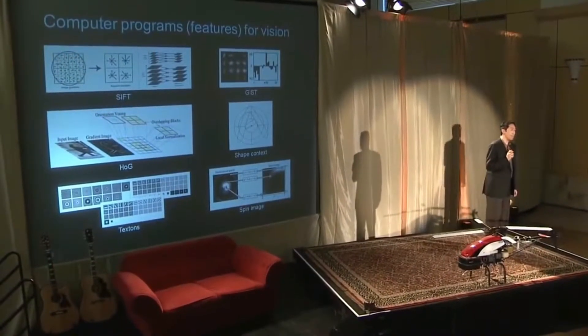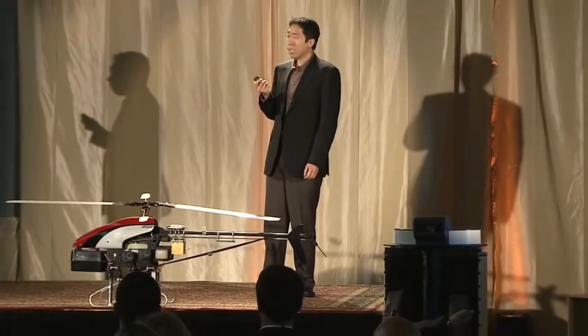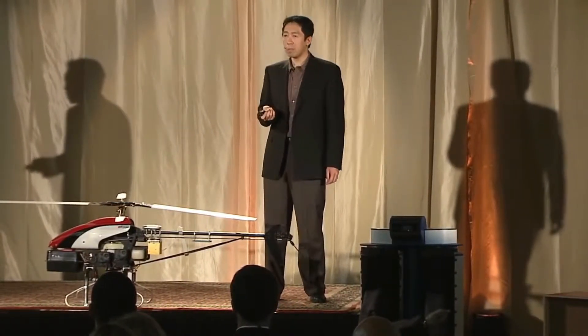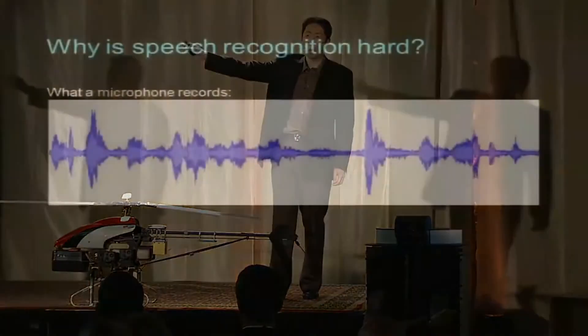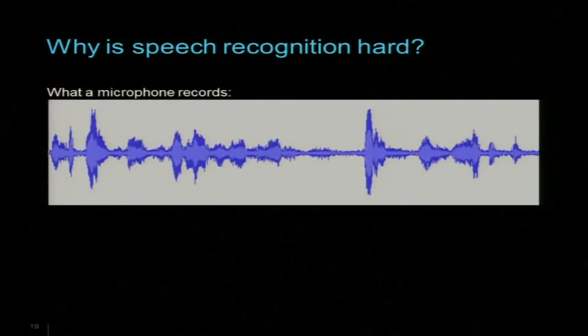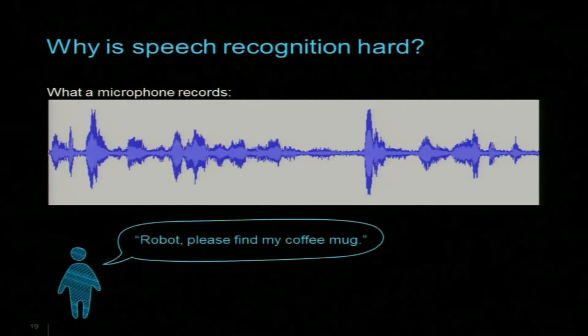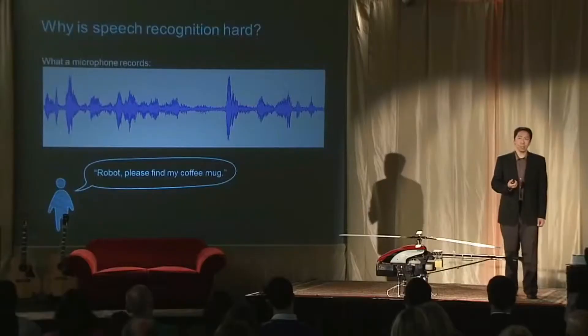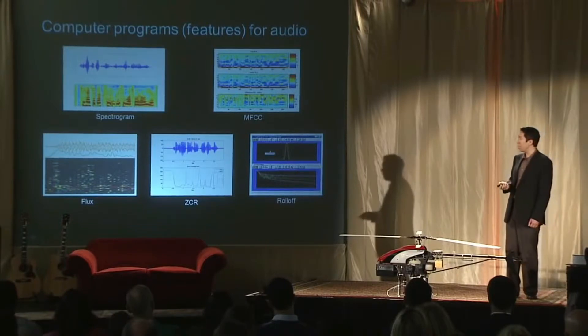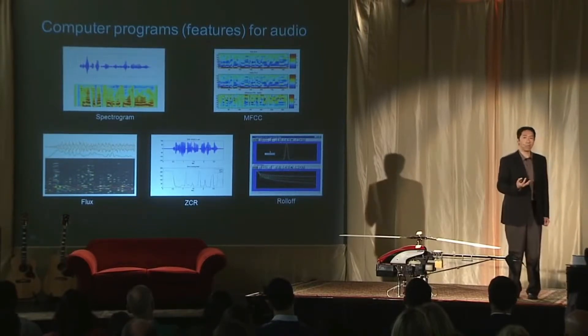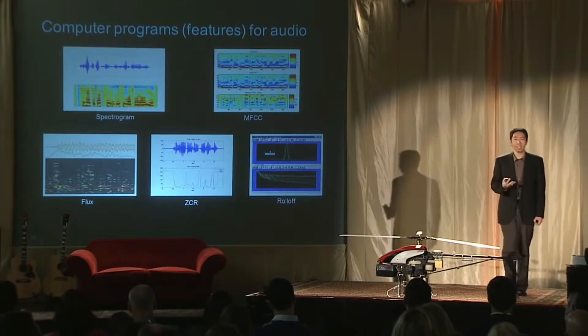Perception for robots isn't just vision — we also want it to understand audio. For example, we want the robot to understand when I say words to it. We're starting to have software that can do speech recognition, but it's still hard for a similar reason as vision. The speech recognition problem is to look at a waveform recorded by a microphone and decide that waveform corresponds to me saying 'robot, please find my coffee mug.' Audio researchers have spent many years writing really complicated programs to try to do these tasks, and it's started to get there, but not quite.